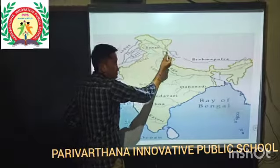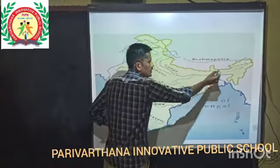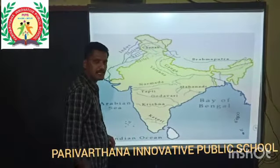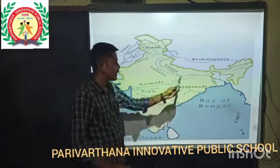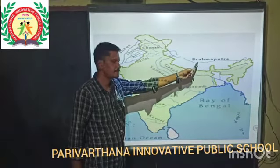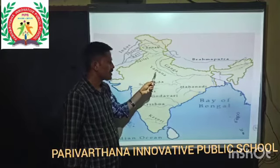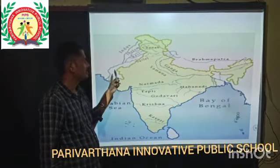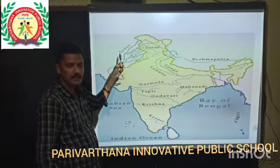The Himalayan mountains are extended to the north. The major rivers originating from the Himalayas are the Brahmaputra river, Ganga river, Yamuna river, and the Indus river.